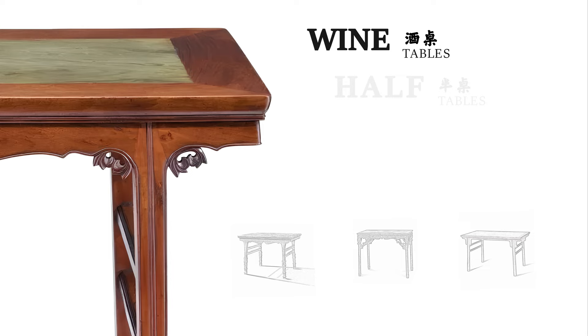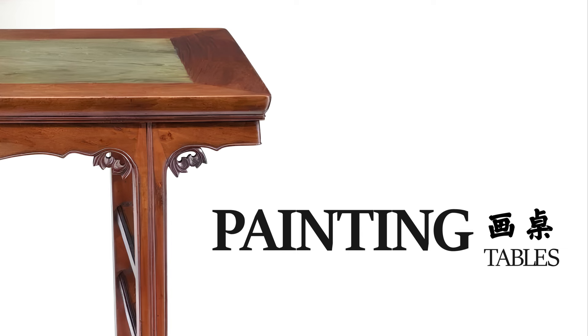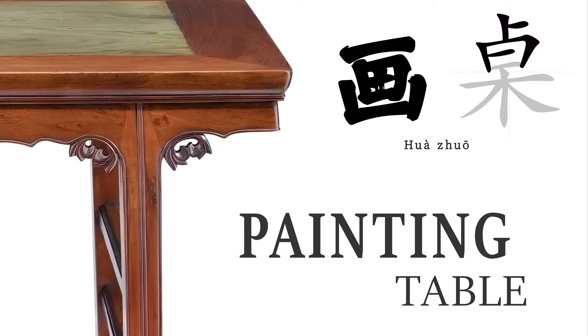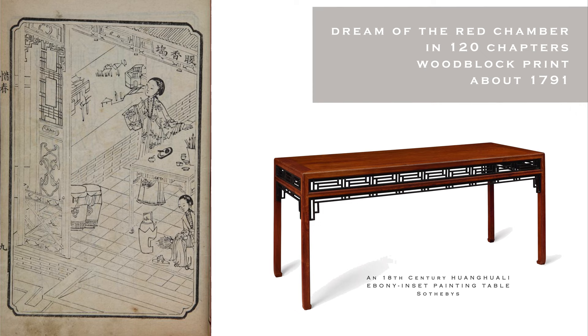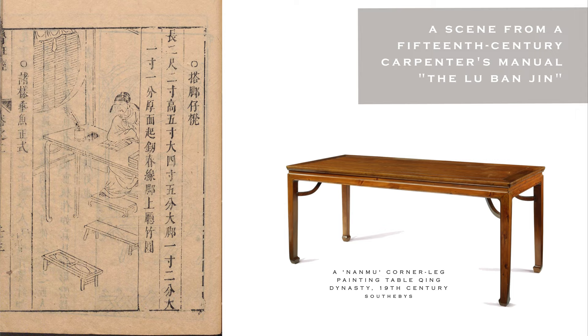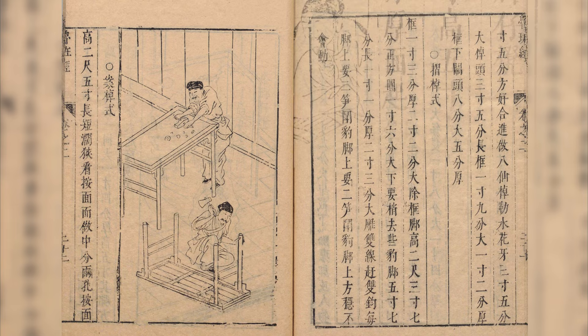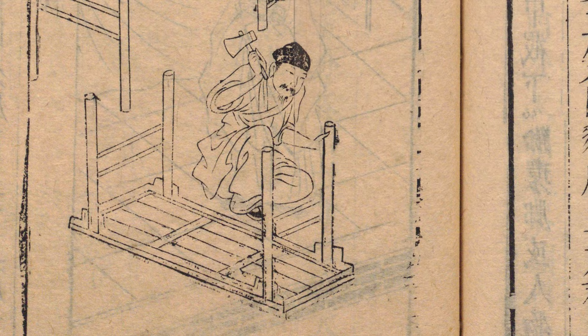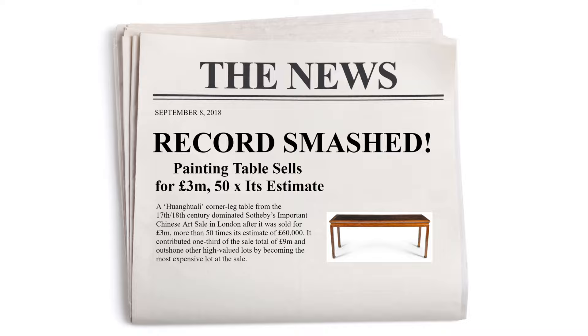Now let's touch briefly on painting tables. The name alludes directly to its use — huajuo literally means painting table. This is an old form dating back to the Tang dynasty or earlier, used for scrolls, calligraphy, and things of that nature. The painting table was an indispensable scholarly tool for the literati and scholar class, used mainly for artistic rather than practical purposes. As a result, painting tables were produced in lesser quantities than other forms and embody the literati temperament — which is why they are highly sought after by collectors today.